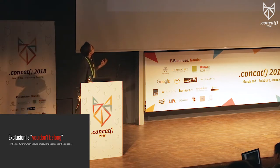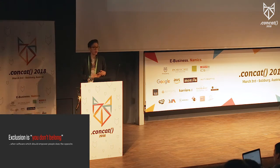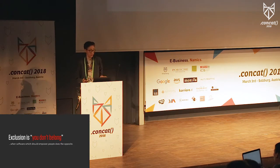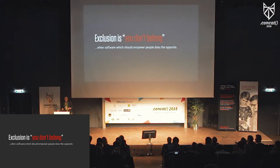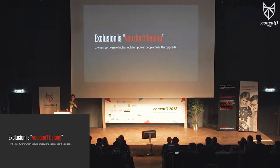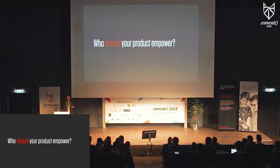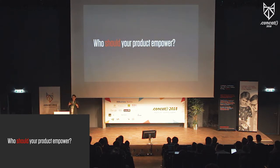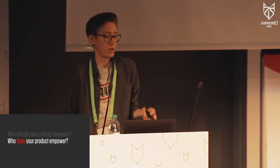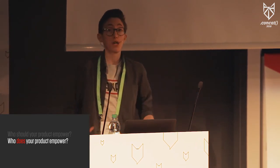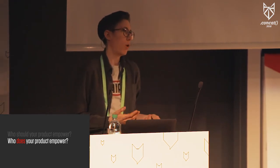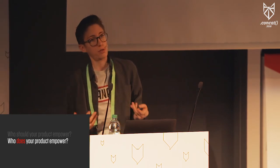Exclusion is telling someone, essentially with our product, that they don't belong. It's when our product fails to empower the people that it should — it does the opposite. And if we're really into actually solving problems, we need to care about this. Inclusive interfaces are often invisible because the barriers that might implicitly keep people out aren't there. But the lack of those barriers doesn't happen by accident. Think about whether or not you're excluding people for whom you want to solve a problem. Who should be empowered by it? And when you build it, who does it empower? Does that match up with who should? By considering all product design decisions in this community context, we'll know how successful those inclusion efforts are.